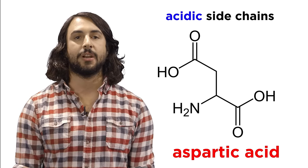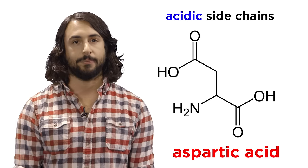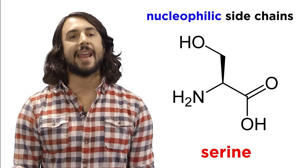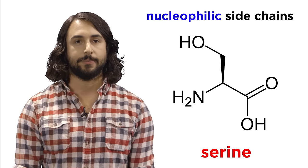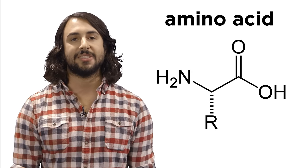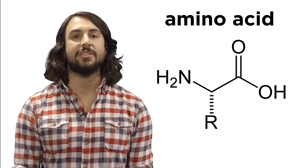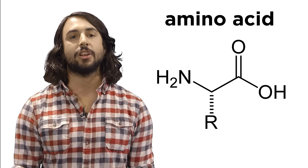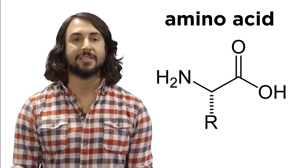Some have R groups that are acidic, like aspartic acid, because of the carboxyl group. Some have R groups that can act as nucleophiles, like serine, because of the hydroxyl group. Every amino acid has its own unique structure and reactivity, and it's the variation in these R groups that determines the characteristics of the molecule that forms when a bunch of these amino acids join together.